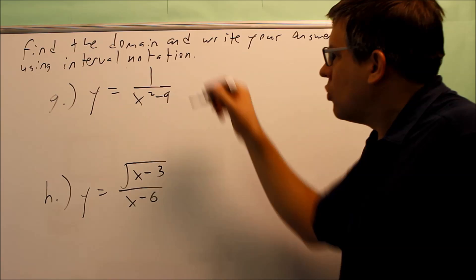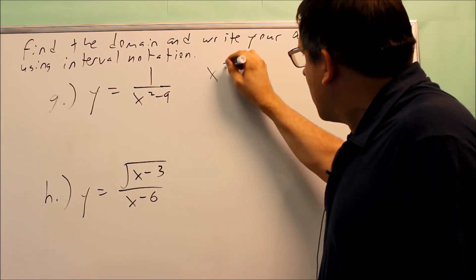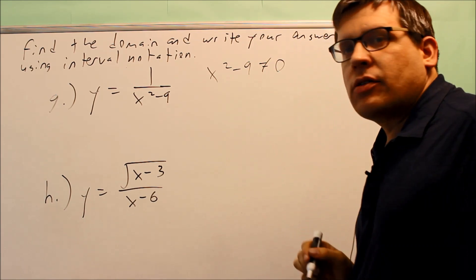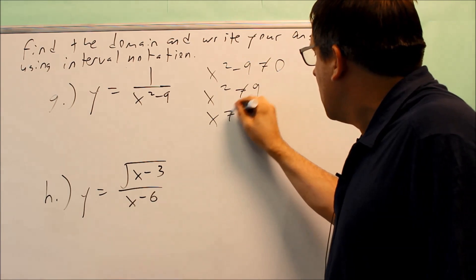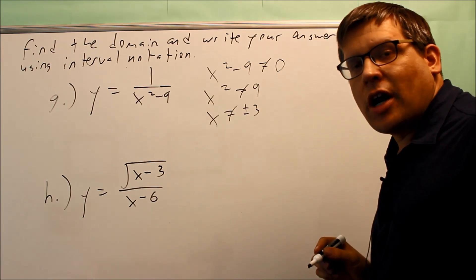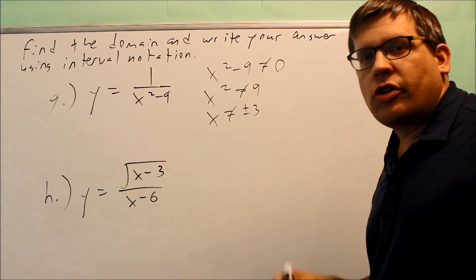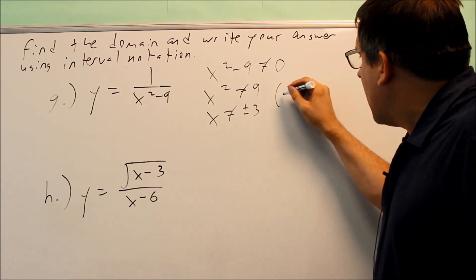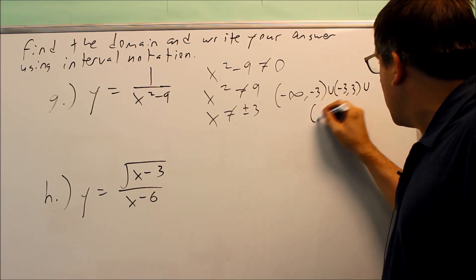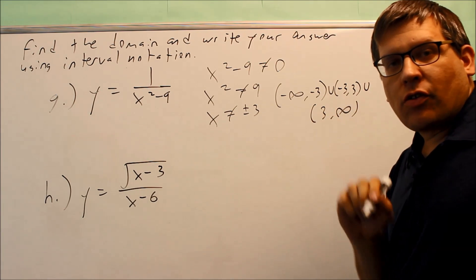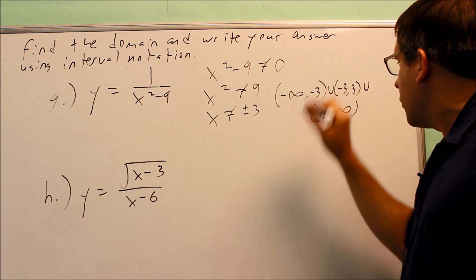Part G is y equals 1 over x squared minus 9. This time the denominator can equal 0. Setting x squared minus 9 not equal to 0 gives x squared not equal to 9, so x is not equal to plus or minus 3. Both 3 and negative 3 must be excluded. In interval notation: everything before negative 3 is okay, between negative 3 and 3 is okay, and after 3 is okay. The answer is negative infinity to negative 3, union negative 3 to 3, union 3 to infinity.